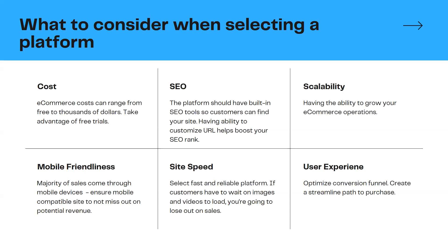Another consideration is the SEO functionality of the platform you choose. SEO is search engine optimization — you're not going to have any customers if people can't find your store in the first place. The platform you choose should have built-in SEO tools. Having the ability to customize your URL with your name and your products will help boost your search engine ranking, especially on Google. Some platforms offer enhanced SEO tools in their plans, while others require an upgrade for advanced tools.